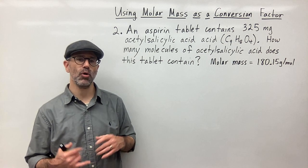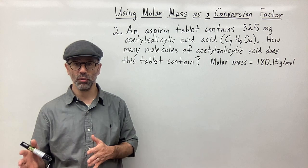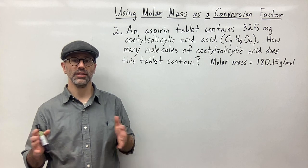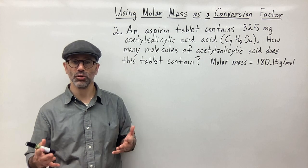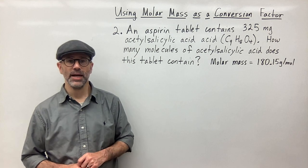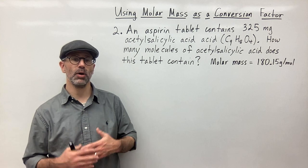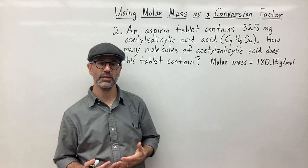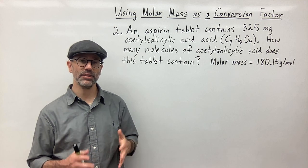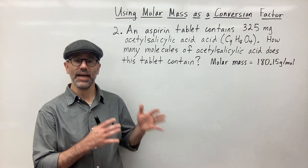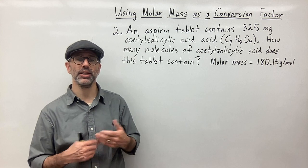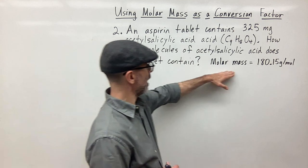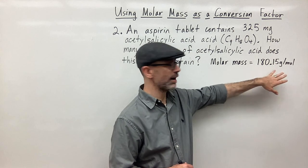We're going to have to use molar mass to convert grams to moles, and then we're going to need to use Avogadro's number — one mole is equal to 6.022 times 10 to the 23rd particles, or in this case molecules. We also need to convert milligrams into grams because molar mass is the amount of grams equal to one mole of the substance. The molar mass of the substance is 180.15 grams per mole.